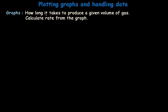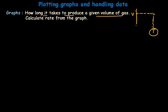After the graph, you may have questions like how long it takes to produce a given volume of gas. To answer this, you need to use extrapolation on the graph — draw a dashed line from the volume on the y-axis across to the curve, then down to the x-axis to find the time. Plotting such extrapolation lines on the graph is very important to find the correct reading.